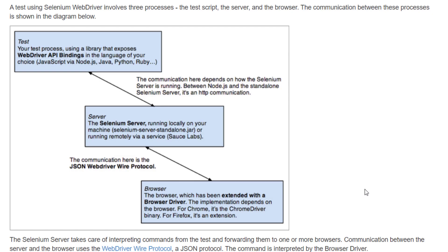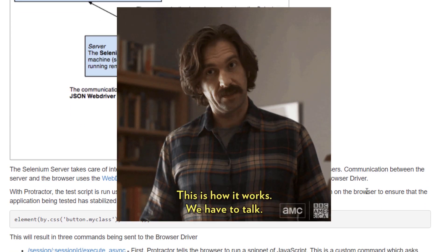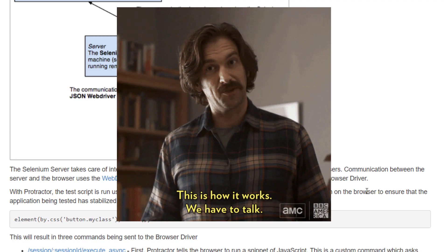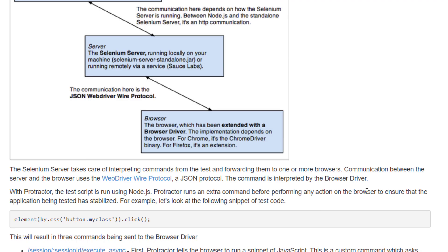The communication between the browser driver and the API happens via the JSON Wire protocol. Don't worry about how the communication internally works - we may cover that in detail in another video. For now, understand that to execute our script, it needs to communicate with the browser, and to do that we need a driver.